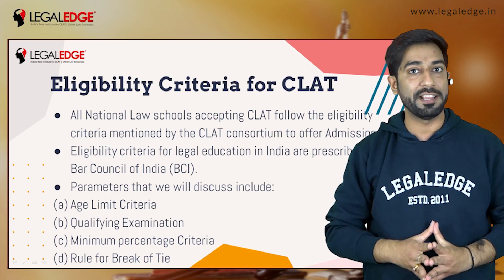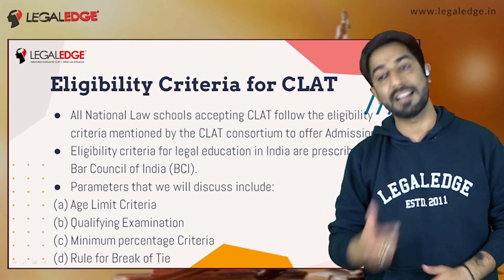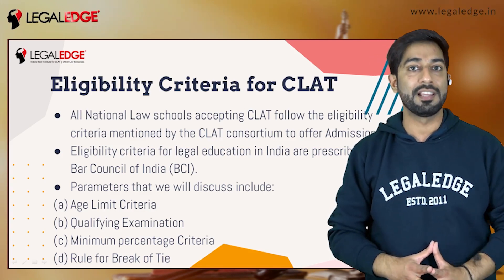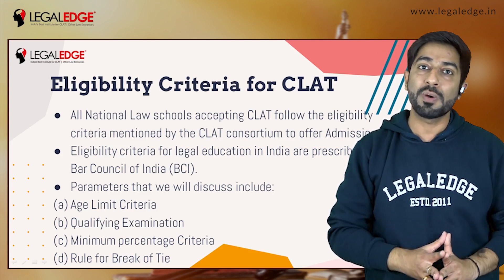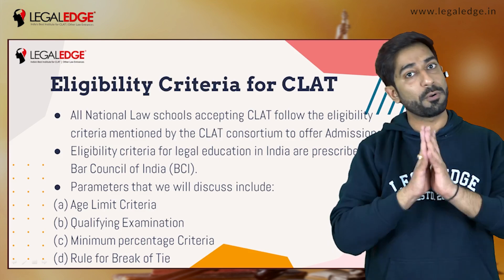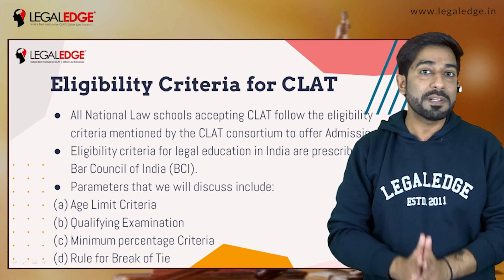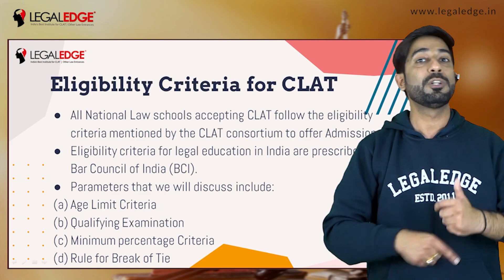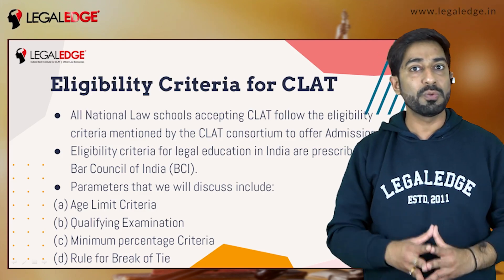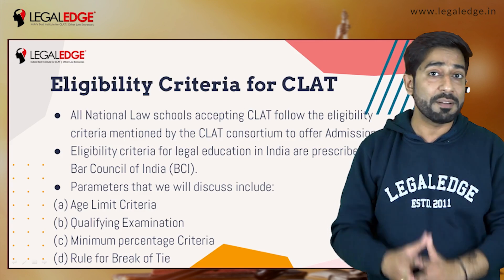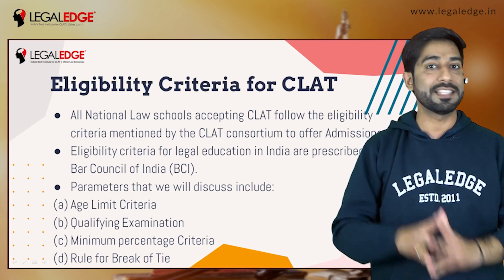The first parameter is the age limit criteria — exactly how old a student should be to get admission into a national law school after writing CLAT. The second is the qualifying examination, which means the 12th board exam. The third is the minimum percentage criteria — how much percentage you should get in the qualifying examination. Last but not least is the rule for break of tie, which applies when two students have exactly similar marks in CLAT.